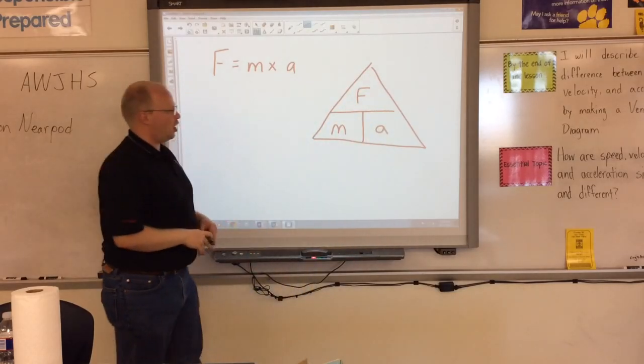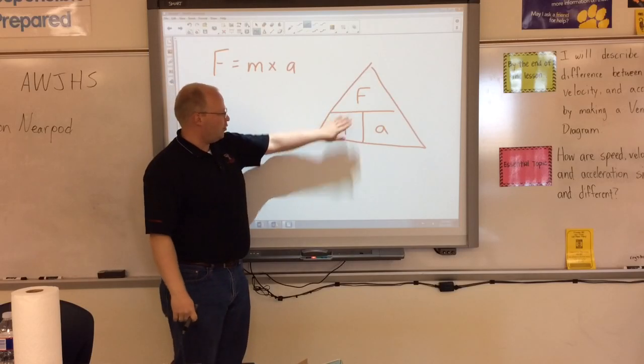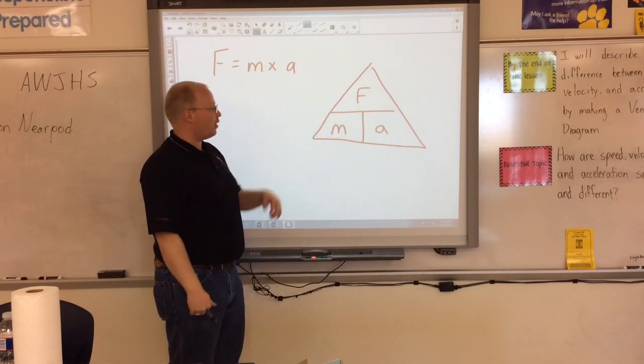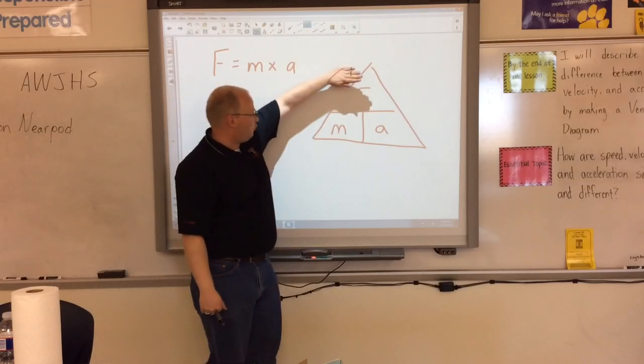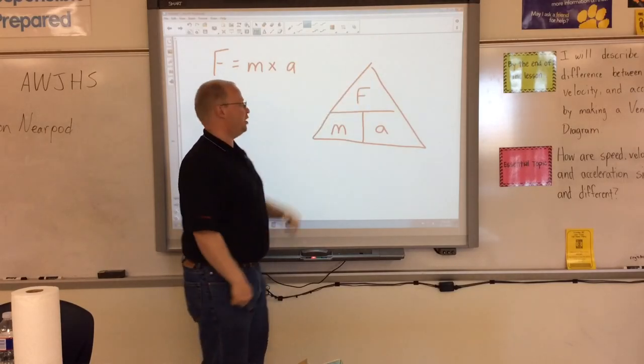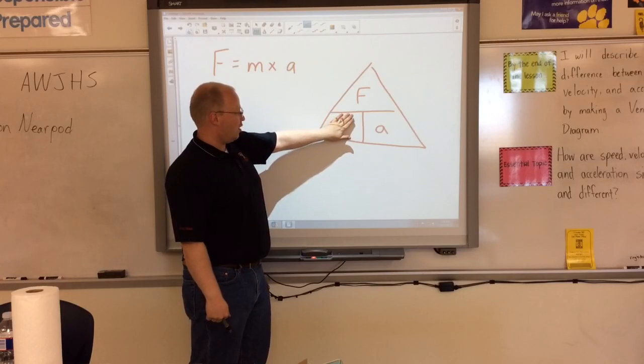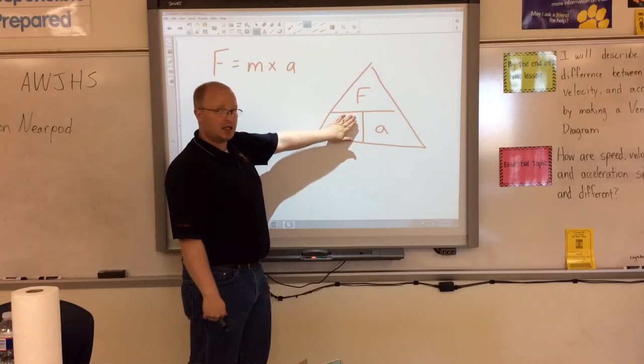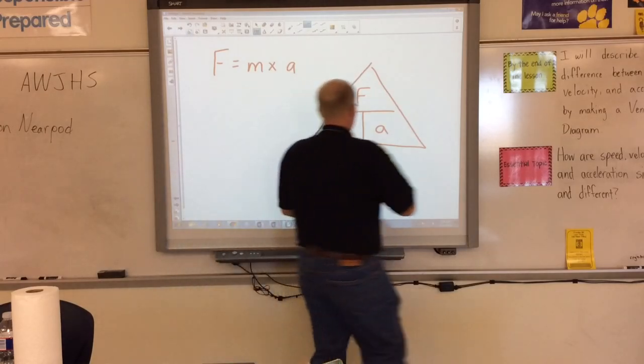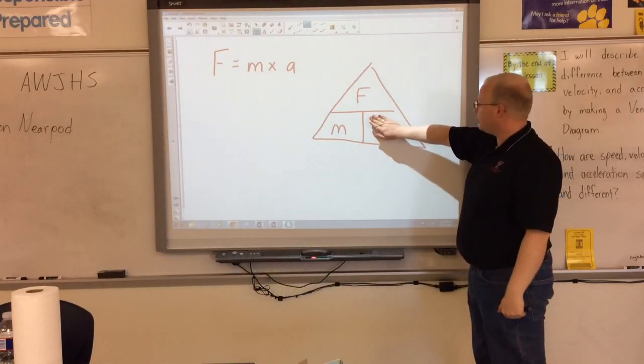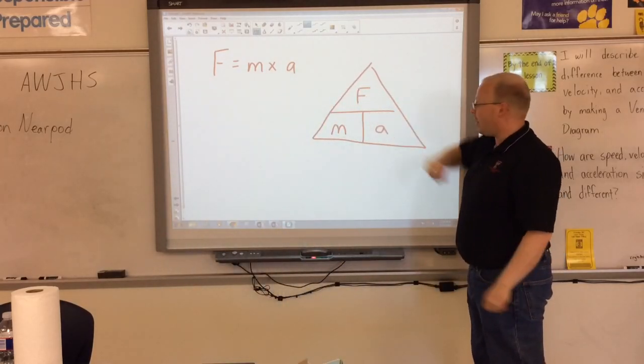So using this triangle, I can now cover up the piece that I'm looking for to figure out what kind of math I need. So if I'm looking for force, it's just mass times acceleration beside each other. If I'm looking for mass, I cover up mass, and it's force divided by acceleration. And then if I'm looking for acceleration, cover up acceleration, it's just force divided by mass.